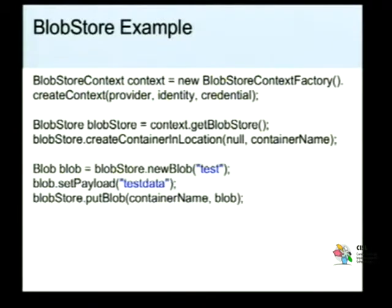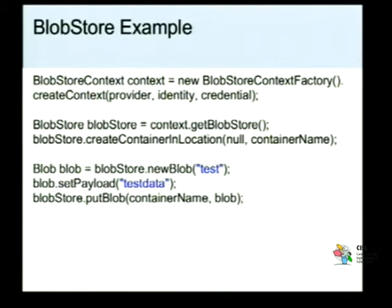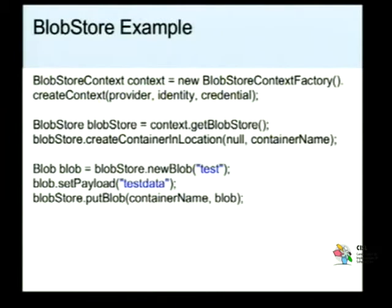Quando você vai executar esse exemplo do BlobStore, você tem que passar essas credenciais para ele acessar o seu container lá dentro do serviço da Amazon. Uma vez criado o contexto, você vai recuperar o BlobStore, que é a abstração para o seu serviço, o seu ambiente lá na Amazon S3. E você vai solicitar a criação de um container nessa localização, passando o nome do container que você vai criar. No caso aqui o nosso container vai ser o br.teste. Ele exige que o container não tenha um nome duplicado.